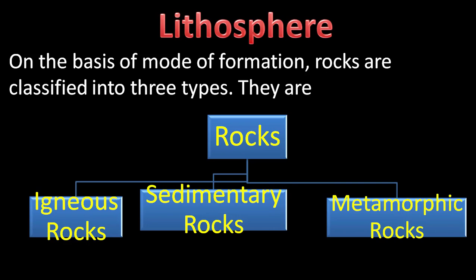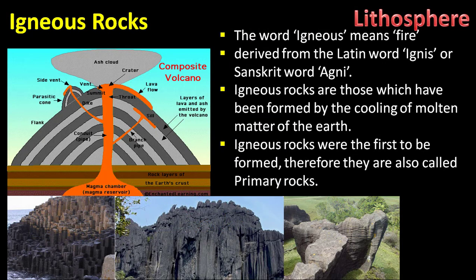Let us go through them one by one. The first one is igneous rocks. The word igneous means fire — derived from the Latin word ignis or the Sanskrit word agni. Igneous rocks are those which have been formed by the cooling of molten matter of the earth. Molten refers to the semi-liquid state of matter. Igneous rocks were the first to be formed, so they are also called primary rocks.